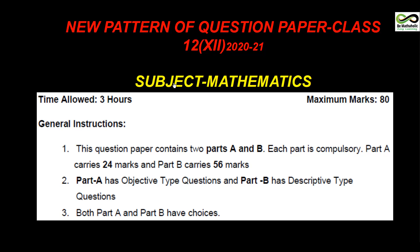This year the pattern has entirely changed. The time allowed will be three hours — this is the writing time — and the maximum marks would be 80. This question paper contains two parts in mathematics; each part is compulsory. Both parts carry 24 and 56 marks respectively. Part A has objective type questions, but this year the pattern has entirely changed.